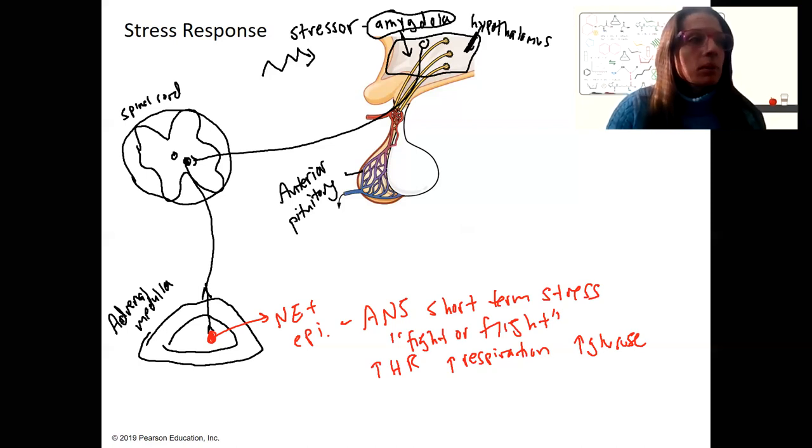All things that we need to be able to have to be able to fight or run from a bear. At the same time, this is a short-term stress response. Immediately run from that bear. At the same time, those same stressors cause these cells right here to release what? We've done this. This is the hypothalamic-pituitary-adrenal axis. You may not remember. Corticotropin-releasing hormone. So this is a second response to that stress.